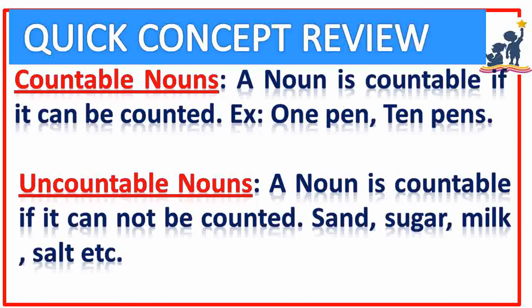Countable nouns. A noun is countable if it can be counted. For example, one pen, ten pens. Uncountable nouns. A noun is uncountable if it cannot be counted. For example, sand, sugar, milk, salt, etc.